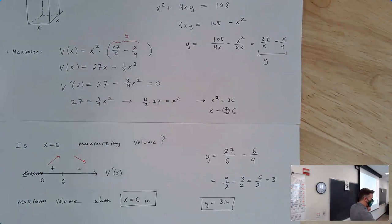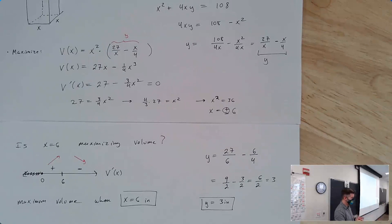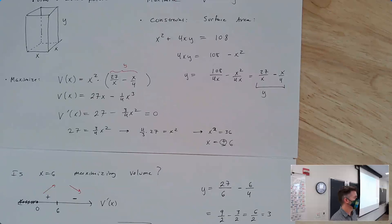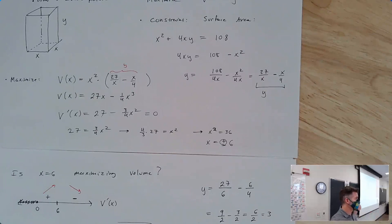Are there questions? The x squared plus 4xy is the surface area. We need that to solve for one variable, and the volume is what we're optimizing. Typically, you use your constraint — in this case, we're constrained by the 108 square inches of material — to isolate one variable and substitute back into the thing you want to optimize.